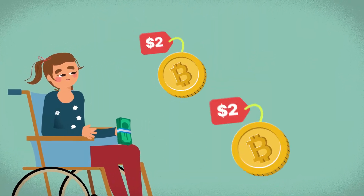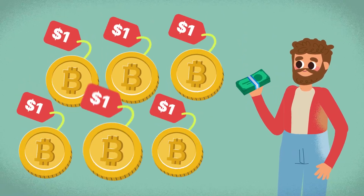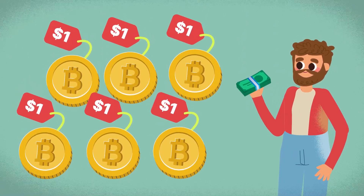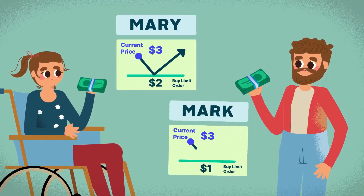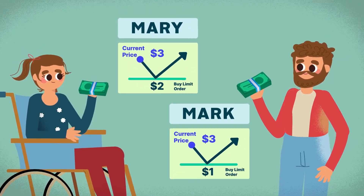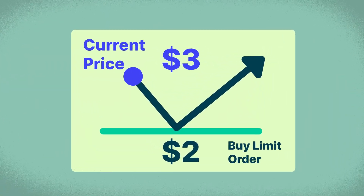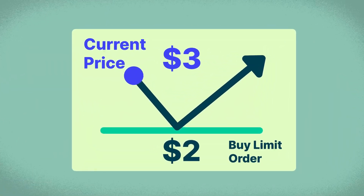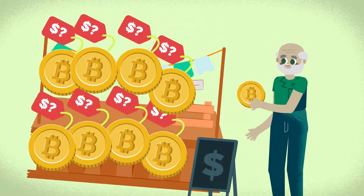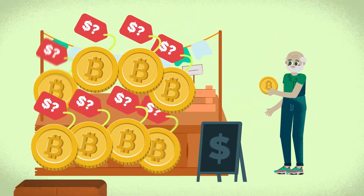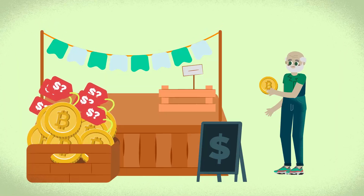Mary wants to buy 5 BTC at $2 each, while Mark seeks a better deal for 6 BTC at $1 each. They create limit orders to buy their desired BTC quantities at different prices. To buy their BTC, they need someone to accept their offers. Terry wants to sell his BTC instantly, so he placed a market order to sell 8 BTC immediately regardless of the price.